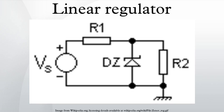Adding an emitter follower stage to the simple shunt regulator forms a simple series voltage regulator and substantially improves the regulation of the circuit. Here, the load current IR2 is supplied by the transistor whose base is now connected to the Zener diode. Thus, the transistor's base current forms the load current for the Zener diode and is much smaller than the current through R2. This regulator is classified as series because the regulating element — viz., the transistor — appears in series with the load.